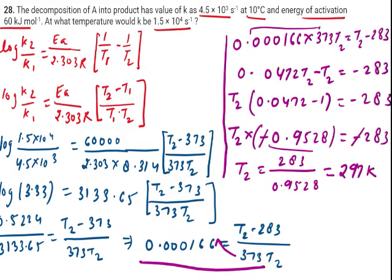So I am going to convert this into degree Celsius by subtracting with 273. So it becomes 24 degree Celsius. This is the answer of T2.